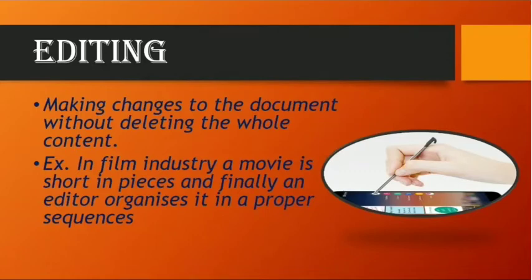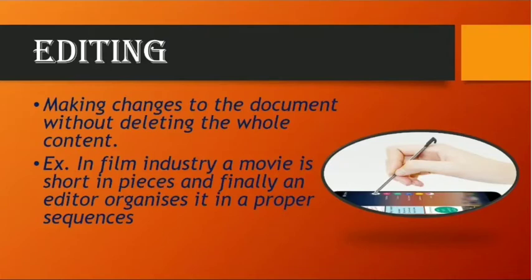You have seen in the film industry — movies are shot in small shots, but they add all those shots together to make a full film. Another example: suppose you have written an essay on family and you have written the spelling of 'family' wrong. You won't erase all the pages you have written. The easy method is to erase only that particular word 'family' and correct the spelling. You don't need to erase the whole page. This process is called editing.